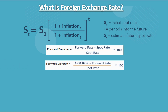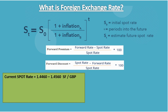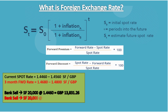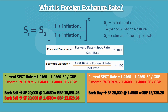For example, suppose that the spot rate for Swiss francs against British pound is 1.4460 to 1.4560 Swiss francs per British pound. A bank would sell 20,000 Swiss francs at the spot rate now for £13,831.26, or under a forward contract for settlement in three months time for £13,623.98. Assume the three-month forward rate is 1.4680 to 1.4800 Swiss francs per British pound. A bank would buy 20,000 Swiss francs at the spot rate for £13,736.26, or under a forward contract for settlement in three months time for £13,513.51.